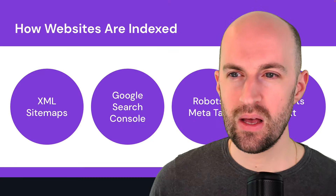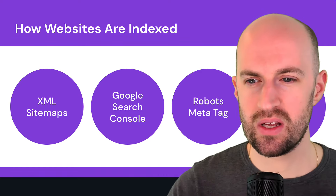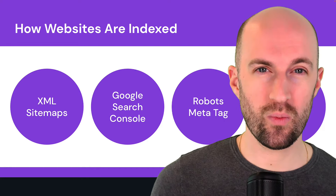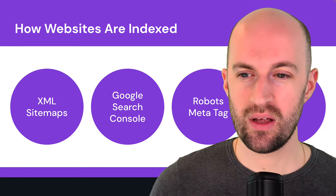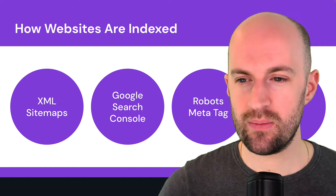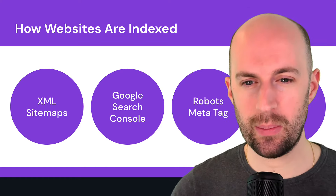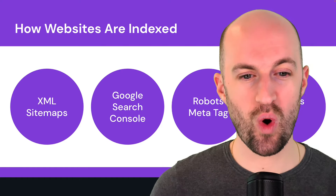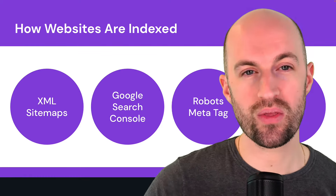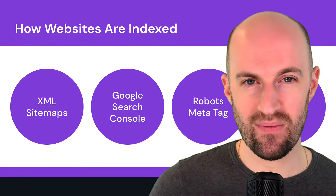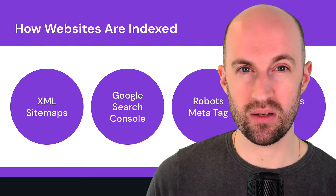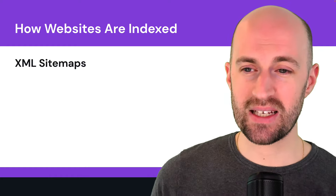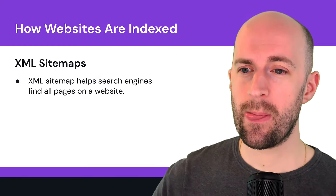How are websites indexed? There are four different ways Google and other search engines can discover your web pages. First, XML sitemaps. Second, Google Search Console. Third, the robots meta tag. And fourth, the robots.txt file. Let's go through each one.